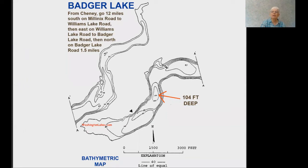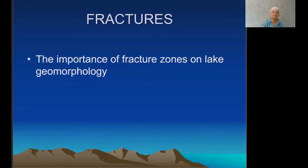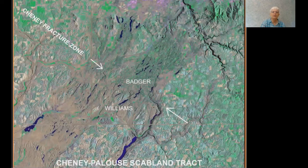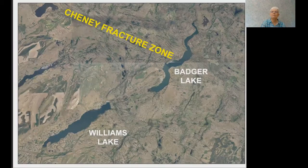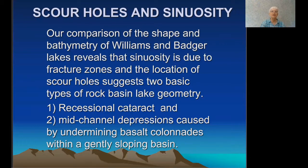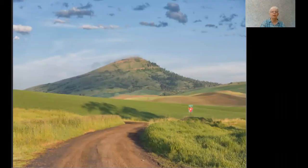A contour map of Badger Lake's depth shows the deepest point in the center, about two-thirds of the way toward the southern end — due to erosional undermining and collapse of the basalt colonnades. Fracture zones differentially enhance plucking, causing sinuosity in lakes. The Cheney fracture zone runs right through the middle of Badger Lake, while Williams Lake is not affected by it. Our comparison of the shape and bathymetry of Williams and Badger Lake reveals that sinuosity is due to fracture zones, and the location of scour holes suggests two basic types of rock basin lake geometry: first, recessional cataracts; and second, mid-channel depressions caused by undermining basalt colonnades within a gently sloping basin.